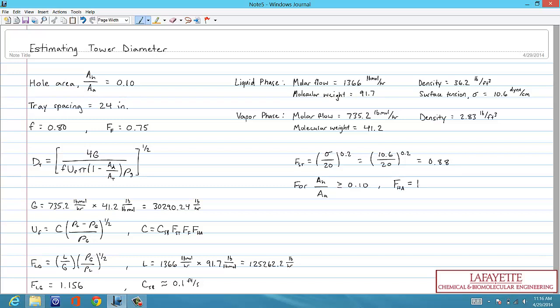Now that we have all the necessary parameters, we can calculate c, which turns out to be about 0.066. Plugging this into the equation for u sub f results in a vapor flooding velocity of 0.23 feet per second.